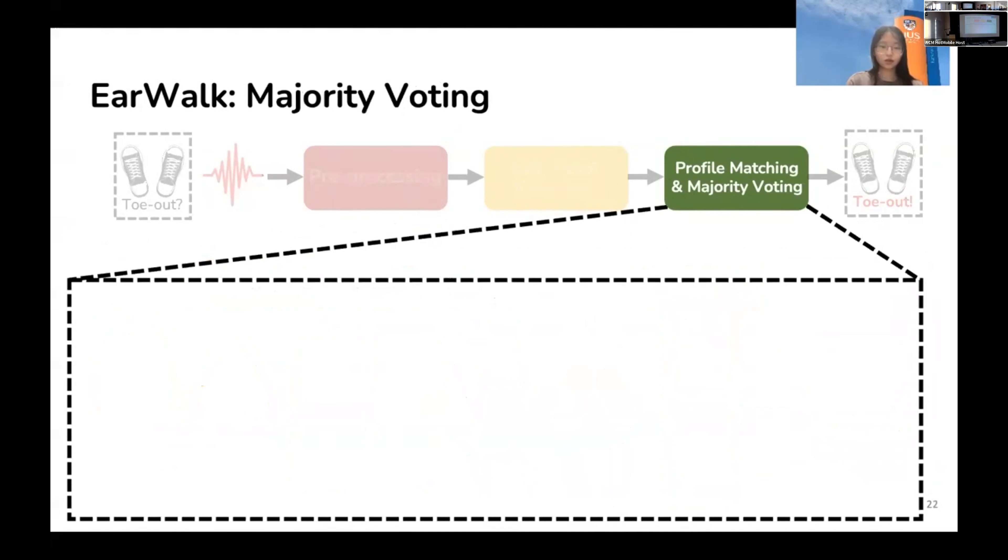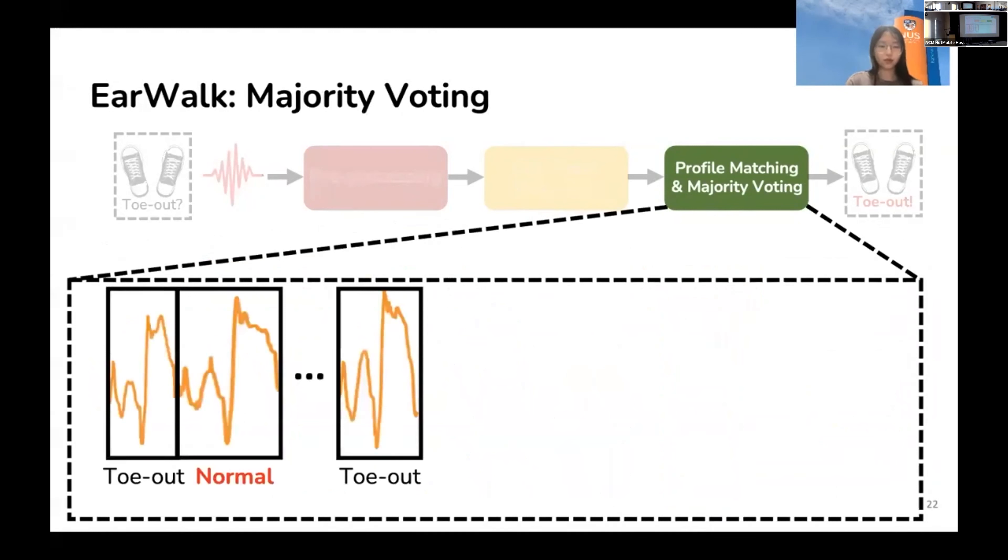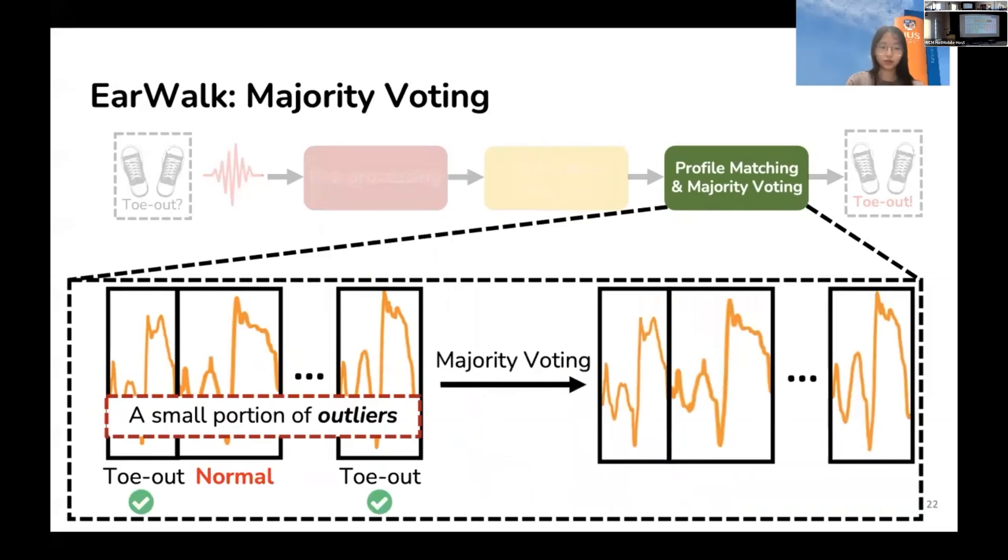However, according to our observation, for a sequence of gait cycles, there is always a small portion of cycles that are wrongly identified due to maybe unsteady steps. To increase the identification accuracy, we further use the majority voting scheme to remove the outliers and output the identification results based on the mostly identified posture.